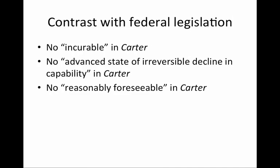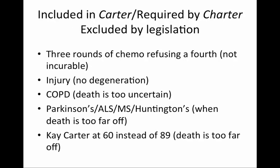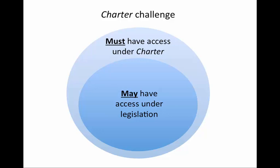Contrast this with the federal legislation: there is no 'incurable' in the Carter Declaration, no 'advanced state of irreversible decline in capability,' and no 'reasonably foreseeable.' So included in the Carter Declaration—and as will be argued in court, required by the Charter—but excluded by the legislation, are the following: someone who has had three unsuccessful rounds of chemo refusing a fourth (not incurable); a traumatic injury five years ago with no degeneration; COPD where death is too uncertain; Parkinson's, ALS, MS, Huntington's where death is too far off; and even a Kay Carter at 60 instead of 89 where death is too far off. The Charter Challenge has already been launched in Lamb v Canada by the same legal team that argued and won the Carter case. This case will focus on those people who the Supreme Court of Canada said in Carter must not be prevented from having access, but who will not have access under the legislation.